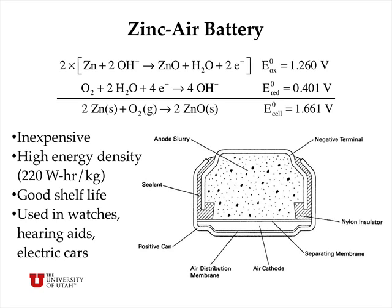Now let's talk about a zinc-air battery, an interesting type of primary cell. It's used only once and is not rechargeable, but it's very inexpensive with a very high energy density of about 220 watt-hours per kilogram, a great shelf life — losing about 2% effectiveness per year when sealed — and is used extensively as button batteries in watches and hearing aids. It's also under development for experimental electric cars. At the anode, zinc metal is oxidized to zinc oxide in particles of zinc dispersed in potassium hydroxide and water. At the cathode, an air cathode reduces O₂ from the air to hydroxide ions. The overall reaction is zinc metal combining with oxygen from the air to make 2 moles of zinc oxide, with an overall cell potential of 1.66 volts under standard conditions.